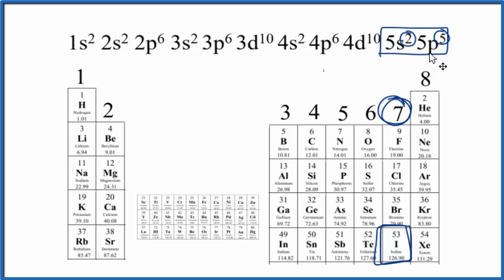If we wanted to write the Lewis structure for iodine, we'd take these seven valence electrons here, write the element symbol, and we'd put them around the iodine atom.